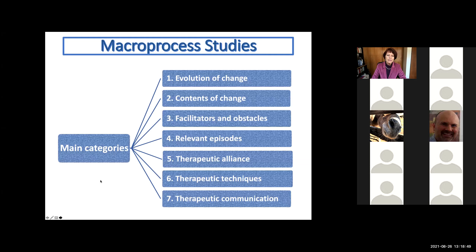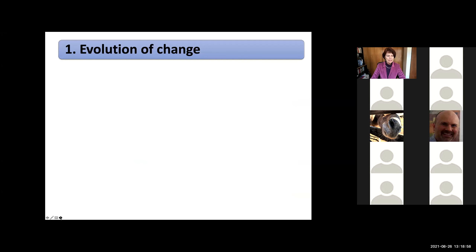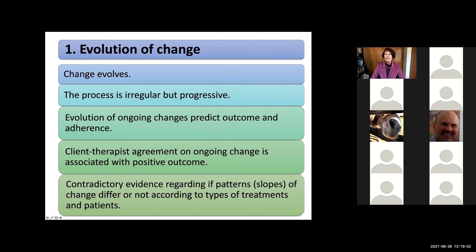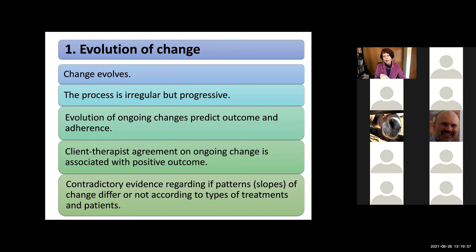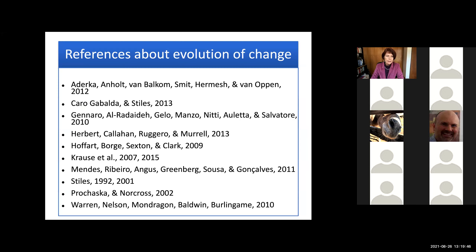Macroprocess studies show us results in seven different categories. Regarding evolution of change: these studies tell us that change indeed evolves throughout the process — it is irregular but progressive. More important, they show that the evolution of ongoing changes predicts outcome and adherence, and that agreement between client and therapist is very important for positive outcome. There is some contradictory evidence regarding whether patterns or slopes of change differ according to types of treatments and patient characteristics.